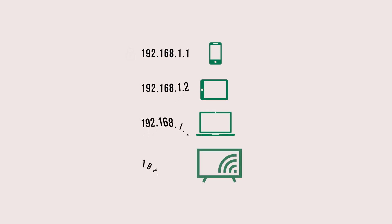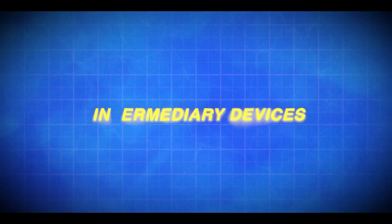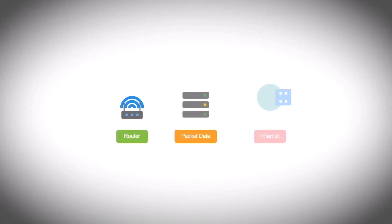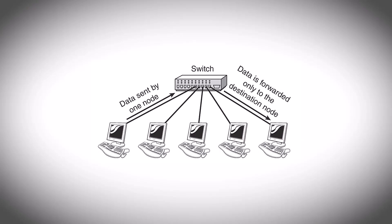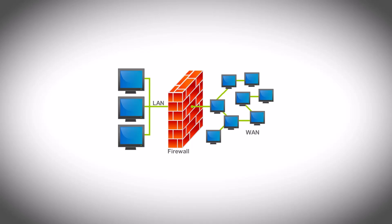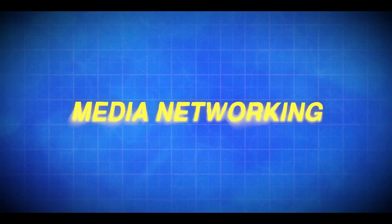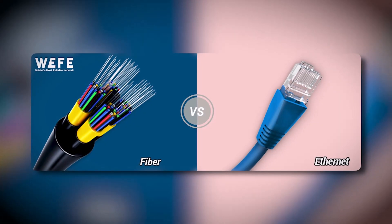To understand how networks function, let's talk about the key components in a little more detail. You have your end devices — the devices that generate and receive data, like PCs, phones, or IoT devices. Each of these devices have unique IP addresses for identification. Then you have your intermediary devices, which include routers, switches, and firewalls. Routers connect different networks and direct traffic, while switches manage data flow within a network. Firewalls add security by filtering traffic. Next is your media — the physical or wireless means through which data is transmitted. Ethernet cables and fiber optic provide wired connections, while Wi-Fi allows for wireless connectivity. The choice of media impacts speed and reliability.